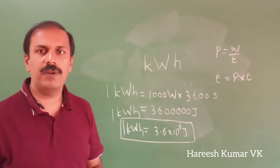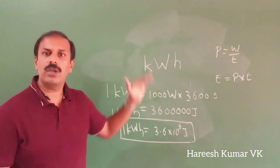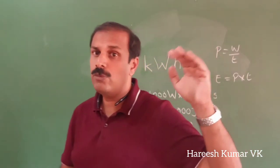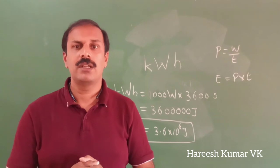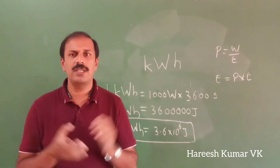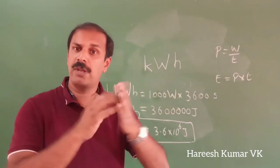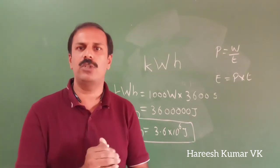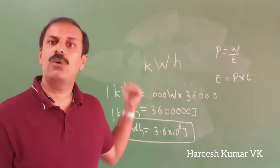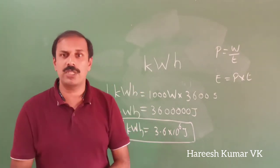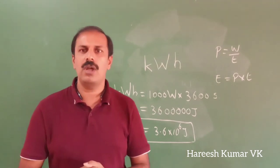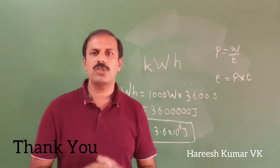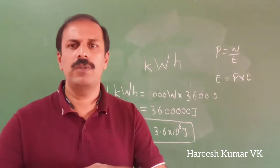This is the last theoretical topic in the work and energy chapter. We started from work, the equation F·s, positive work, negative work, work not done when force is perpendicular. Then kinetic energy, potential energy, conversion between them, and now power and the commercial unit of energy. Numerical calculations are still pending. First solve the textbook questions, then unsolved questions, and refer to other books. If you have any doubts, you can ask.